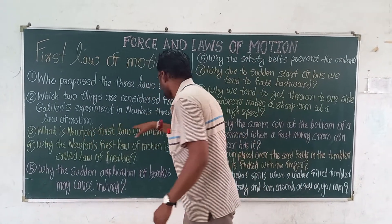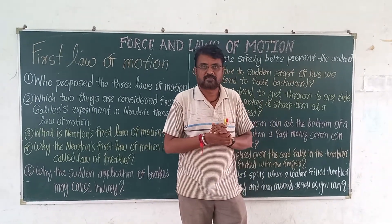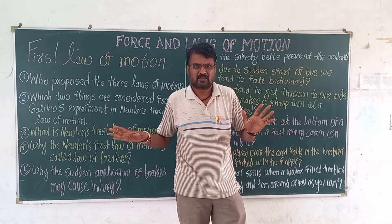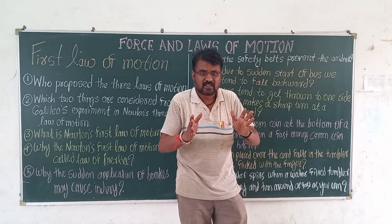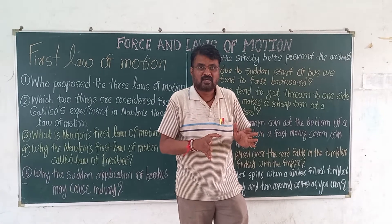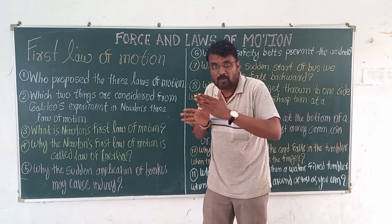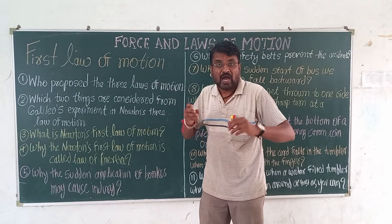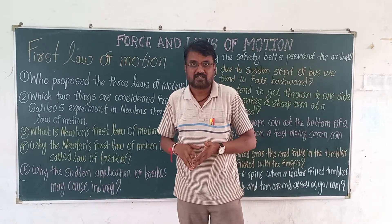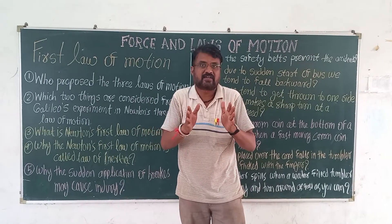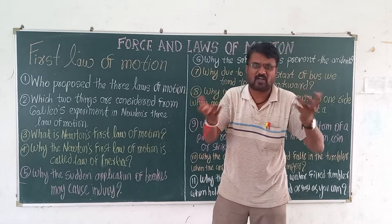What is Newton's first law of motion? In simple language: if anything is at rest, that object will remain at rest; if anything is in uniform motion, it will remain in uniform motion — until and unless an external force is applied on it. Until and unless external force is not applied, that object will be in rest or in uniform motion. This is Newton's first law of motion.